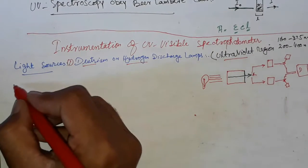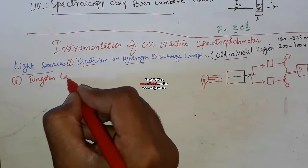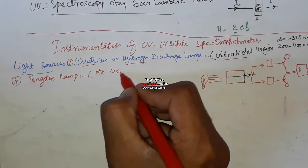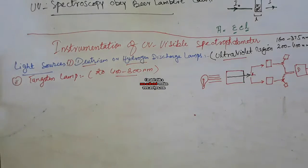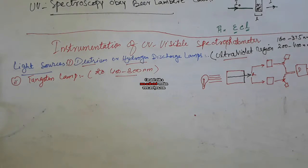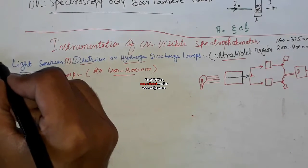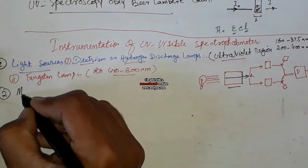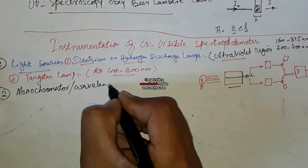These lamps have quartz windows and quartz cuvettes, which are also made of quartz and not of glass, because glass absorbs radiation in the ultraviolet region. This is the deuterium or hydrogen discharge lamp used for the ultraviolet region. The second type of lamp used in UV-Vis is the tungsten lamp, which produces radiation in the visible region from 400 to 800 nanometers. The tungsten lamp simply contains a tungsten filament.